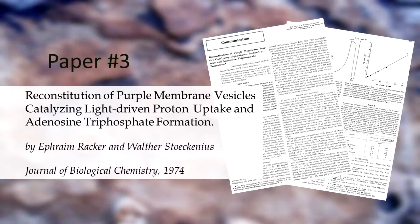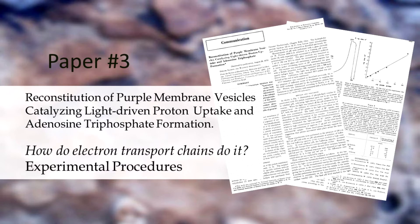Paper number three is 'Reconstitution of Purple Membrane Vesicles Catalyzing Light-Driven Proton Uptake and Adenosine Triphosphate Formation' by Ephraim Racker and Walter Steckenius, published in the Journal of Biological Chemistry in 1974. This paper answers Peter Mitchell's third question: how do electron transport chains do what they do?